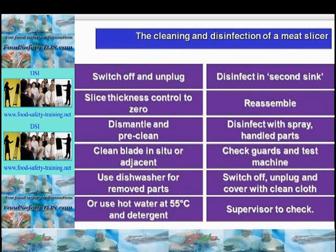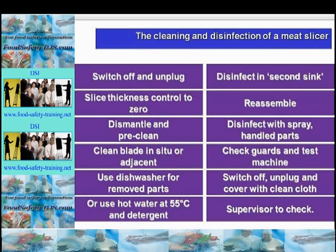The cleaning and disinfection of a meat slicer should only be attempted by trained staff over the age of 18. First, switch off and unplug the appliance and set the slice thickness control to zero. Dismantle the equipment and pre-clean. Use a dishwasher for removed parts where possible; otherwise use hot water at approximately 55°C and detergent with a clean cloth and brush. The blade should be cleaned with hot water and detergent in situ or adjacent to the slicer. If removed, a blade carrier should be used and care taken at all times. Disinfect in a second sink or with chemical disinfectant and allow appropriate contact time.